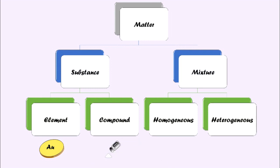Compound is made up of two or more elements. Example, salt. Salt is made up of sodium and chloride. A mixture can be homogeneous and heterogeneous.